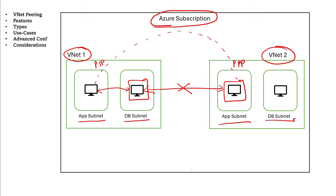Previously, to overcome this problem, site-to-site VPNs were used to connect different virtual networks. But to create a VPN connection you need to manage other resources, and there is a bandwidth constraint on it. To overcome this, Microsoft introduced vNet peering.